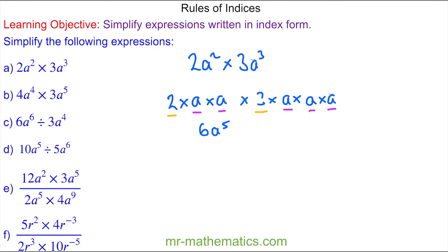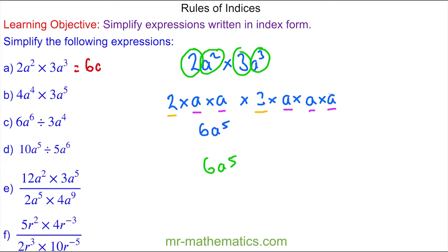A simpler way of working this out is to multiply the 2 by the 3 which is 6, and then we use the multiplication rule to add the powers. So 2a squared multiplied by 3a cubed is 6a to the power of 5.